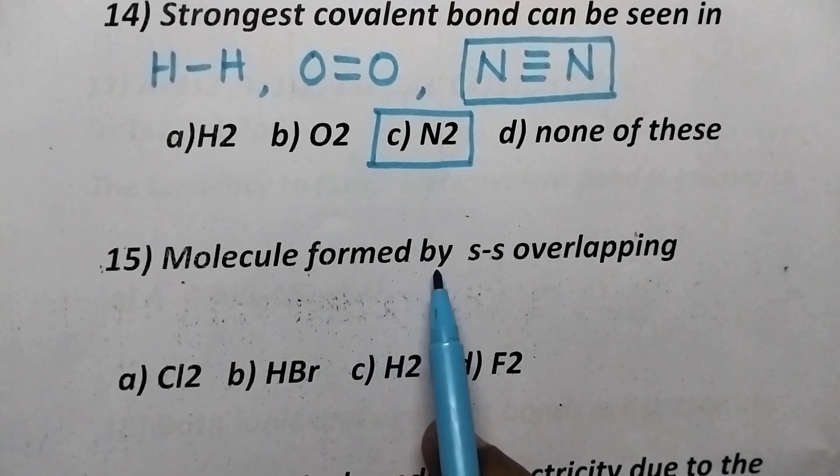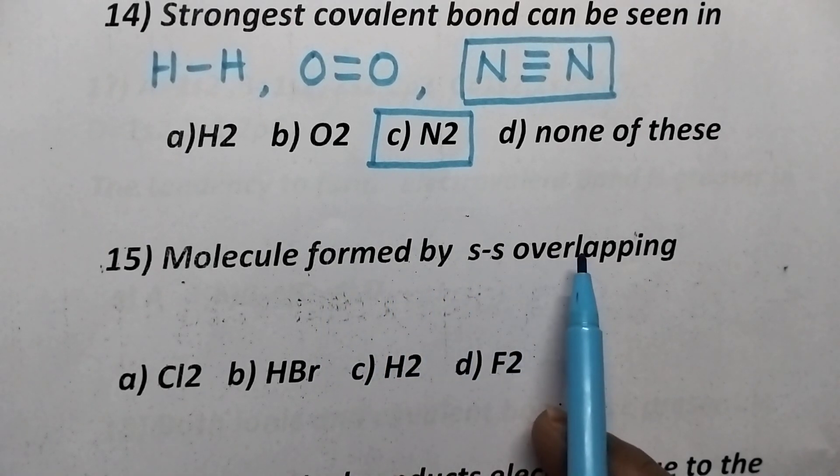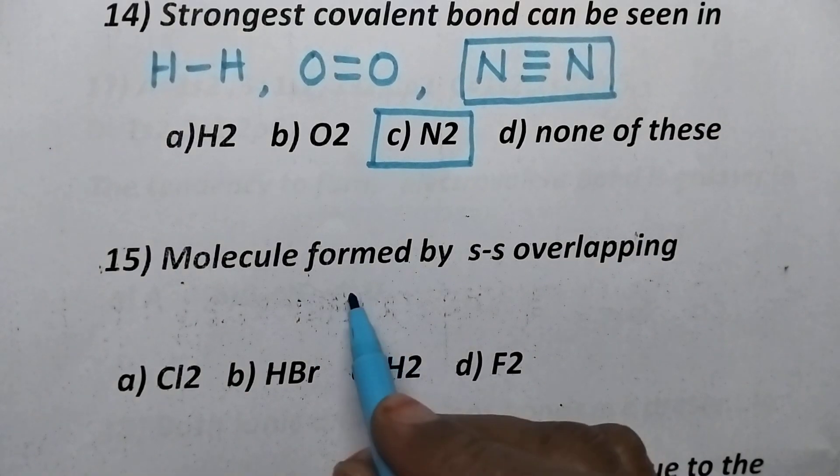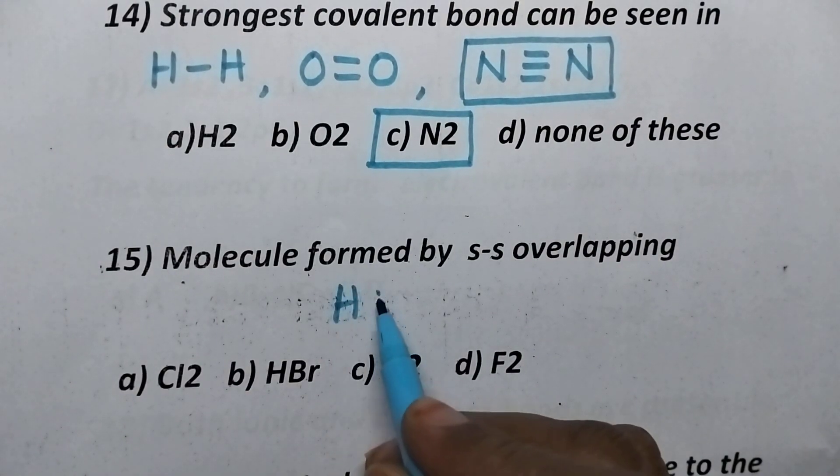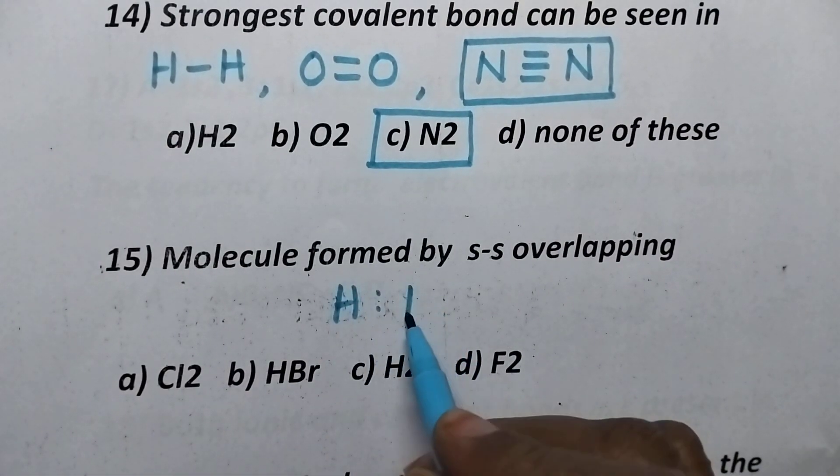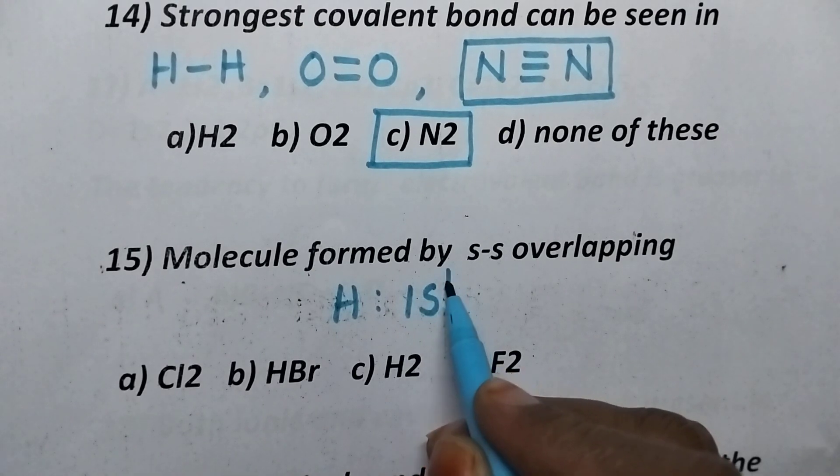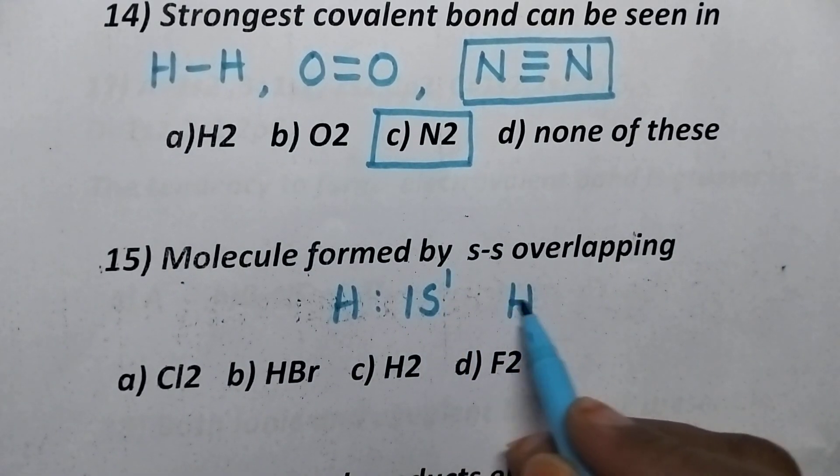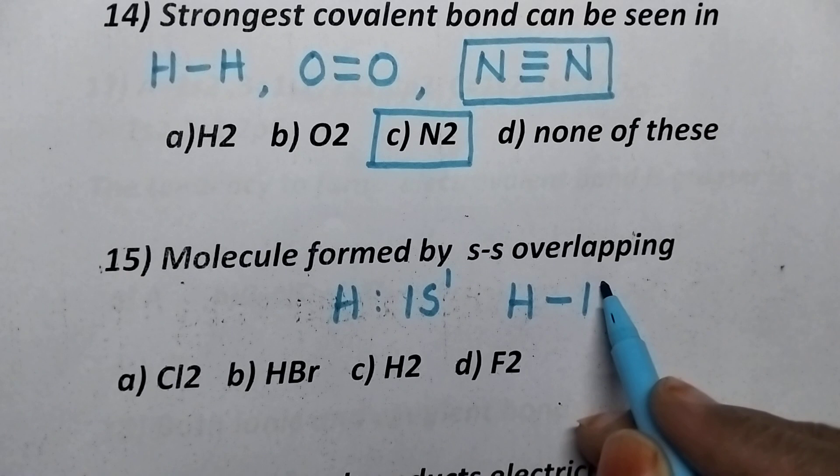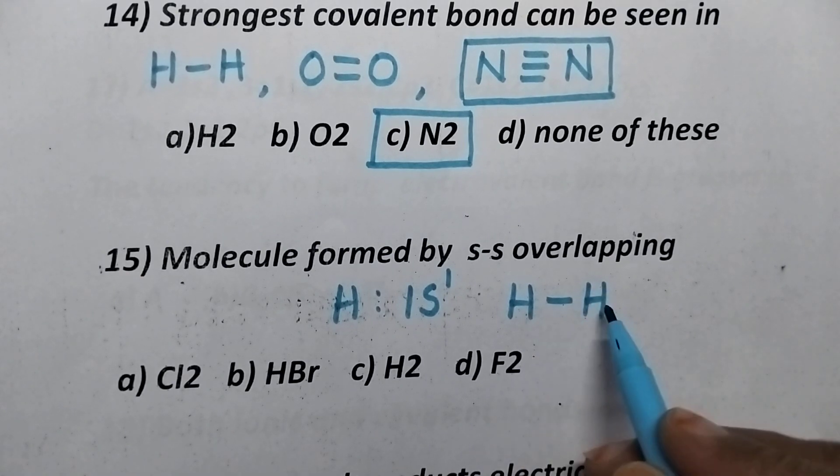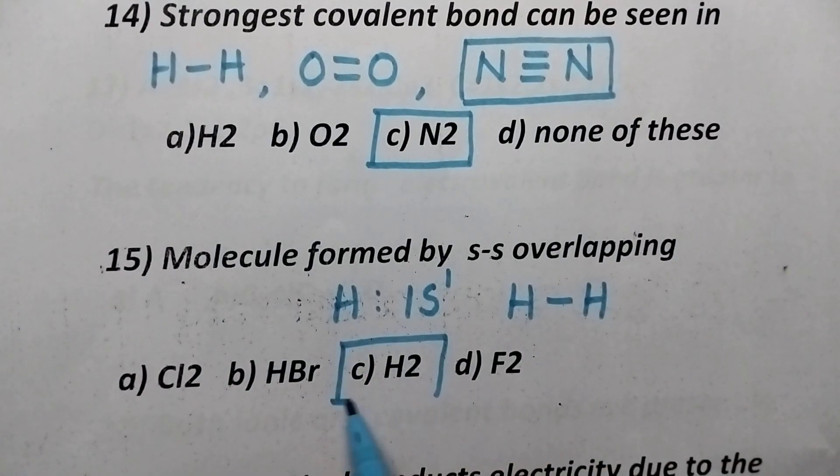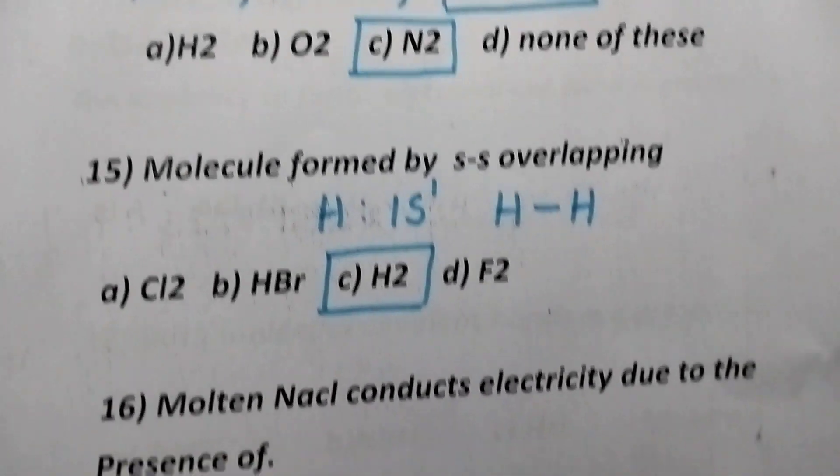Molecule formed by SS overlapping is. So, coming to the option C, that is hydrogen, the atomic number of hydrogen is 1 and its configuration is 1S1 and hence it is capable of forming the single bond through SS overlapping. So, option C, hydrogen molecule is the right answer.